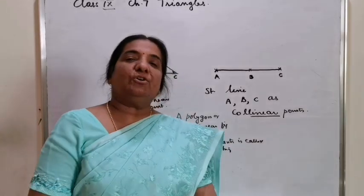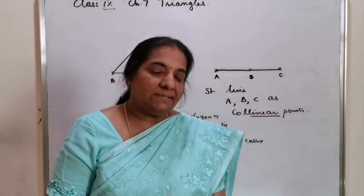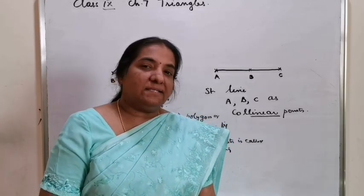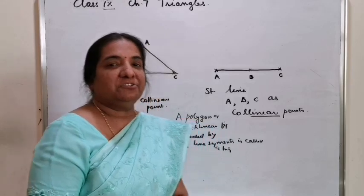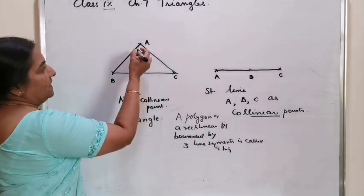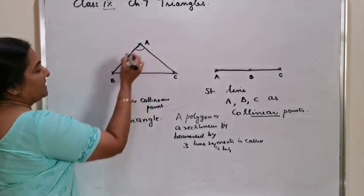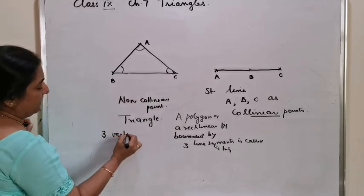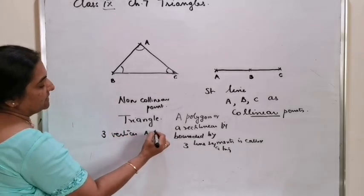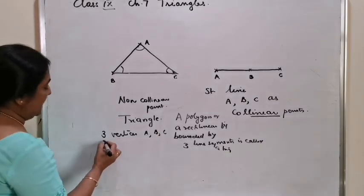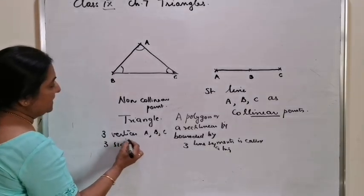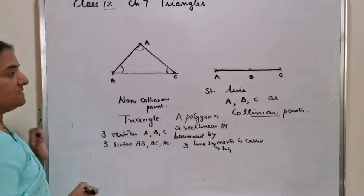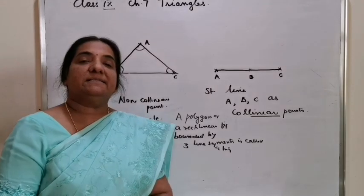So when 3 non-collinear points are joined, we get a triangle. What are the 6 elements of a triangle? The 6 elements of a triangle are 3 vertices — points A, B, C — and 3 sides AB, BC, and AC, which are line segments.